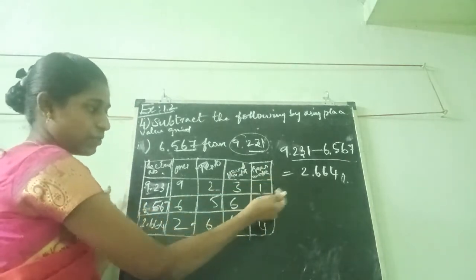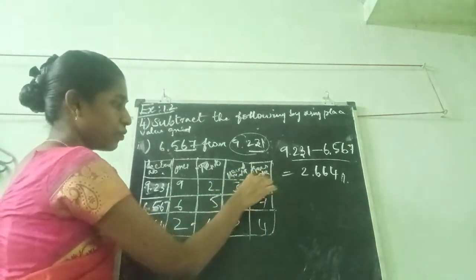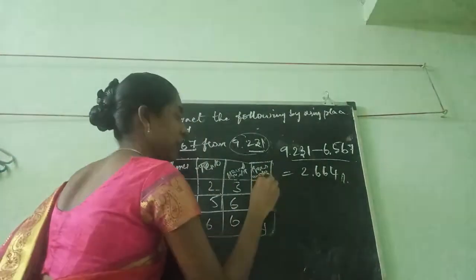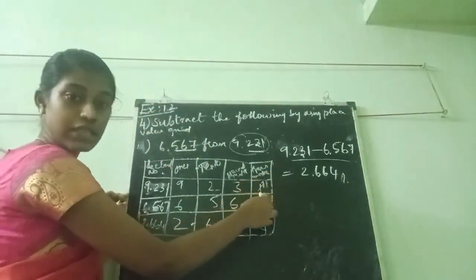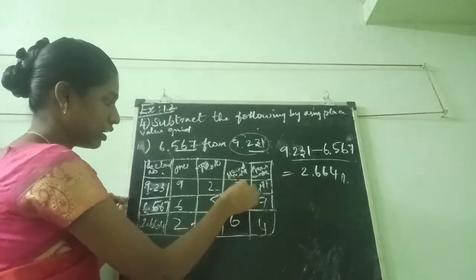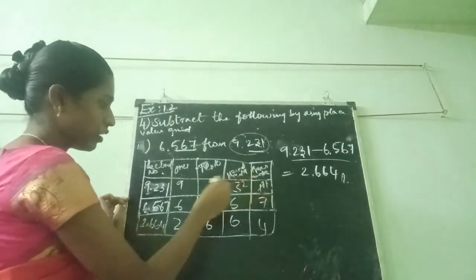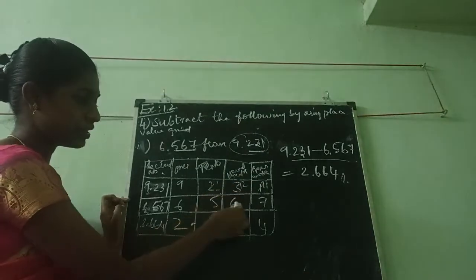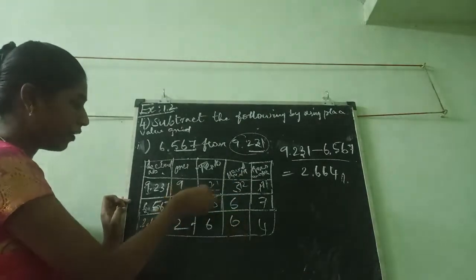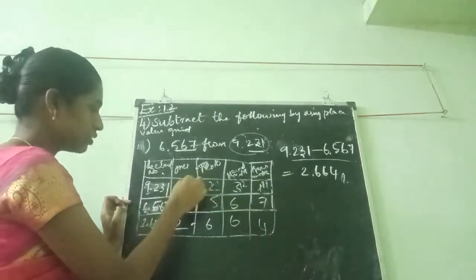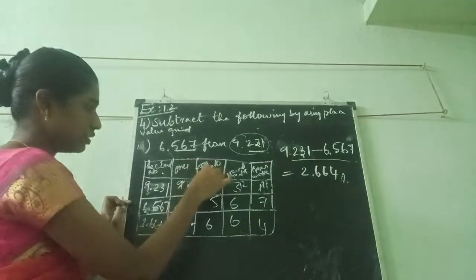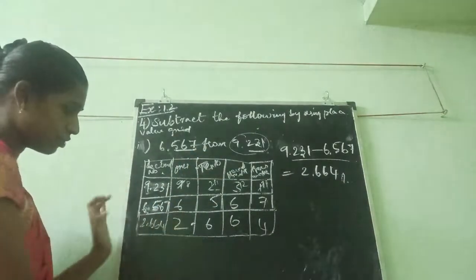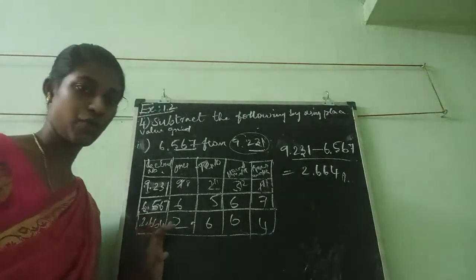In this 1 minus 7 means it does not go, so I am taking carry 1 — that means 11. 11 minus 7 is 4. Then here 2, carrying this 1, that means 12. 12 minus 6 means 6. Now I am also taking carry here — 11 minus 5 means 6. Then 8 minus 6 means 2. The answer is 2.664.